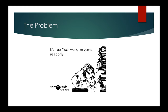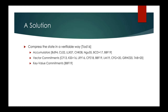This disincentivizes people from validating the blockchain. We'd like as many people to verify the blockchain as possible so that we don't have to trust others for the correctness of the blockchain state. The solution is to compress the state of the blockchain in some verifiable fashion using primitives such as accumulators, vector commitments, or key value commitments.